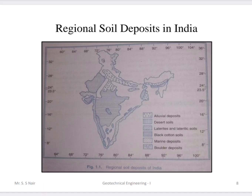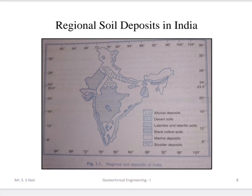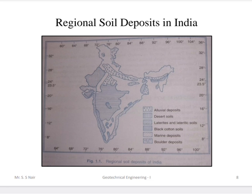Looking at this map of India, we can see major soil deposits by region. Desert soil is seen in Rajasthan. Marine soil deposits are seen in Gujarat and some south Indian states like Kerala. Black cotton soil is found in some regions of Maharashtra. Boulders are seen in north Indian states like Jammu and Kashmir. This map shows the regional soil deposits across India.